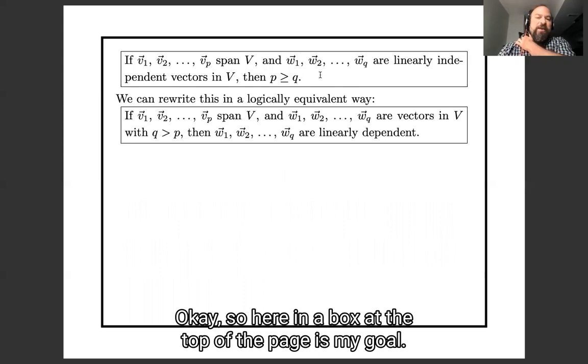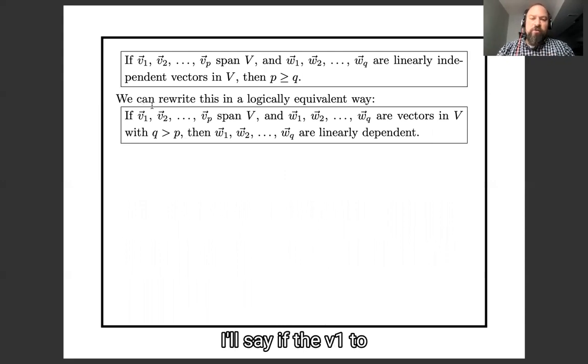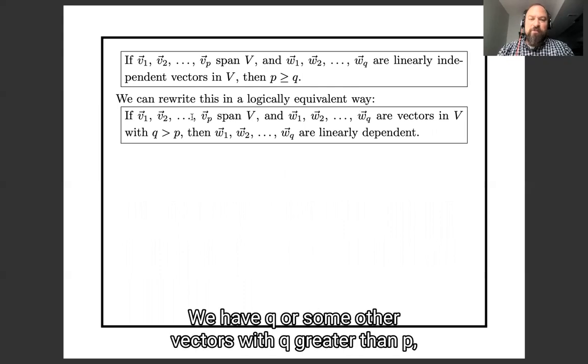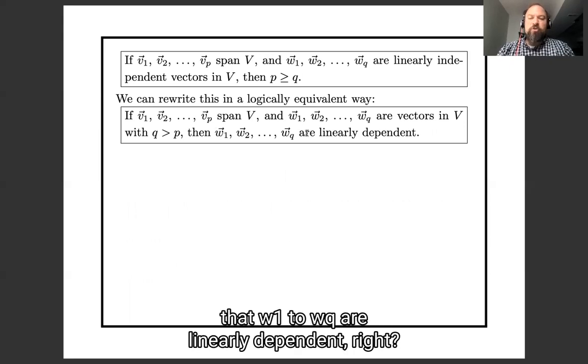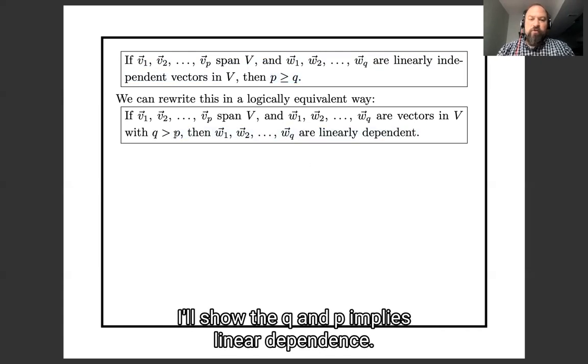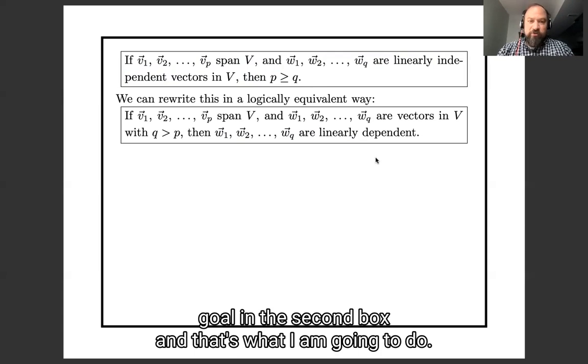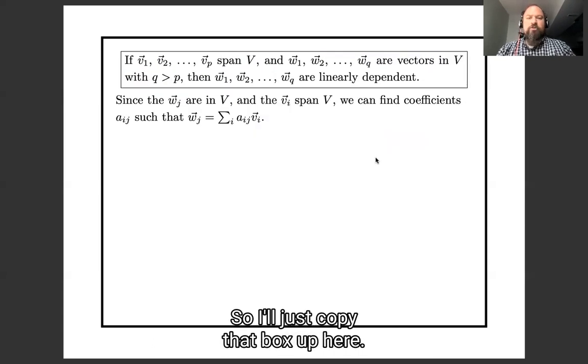Okay, so here in a box at the top of the page is my goal. And I can rewrite this in a logically equivalent way. I'll say if v1 through vp span and w1 through wq are linearly independent with q greater than p, then w1 through wq are linearly dependent. Right, so instead of proving that linear independence implies p greater than or equal to q, I'll show that q greater than p implies linear dependence. So here's a logically equivalent goal in this second box, and that's what I'm going to do.